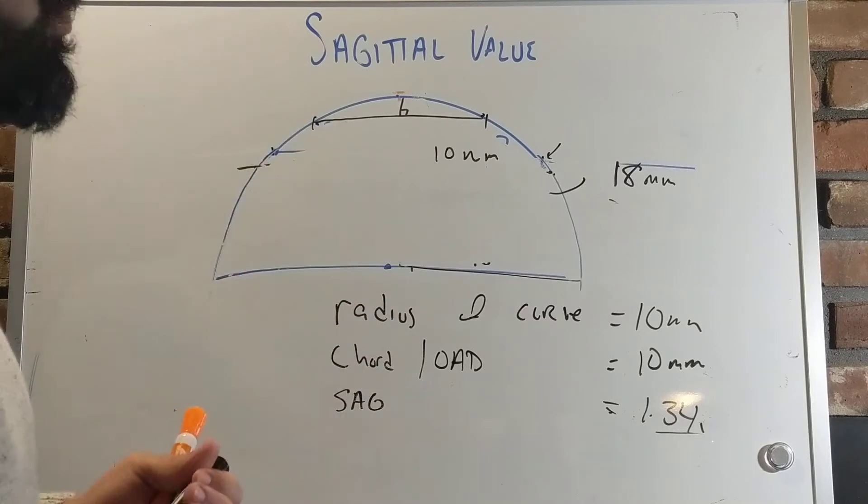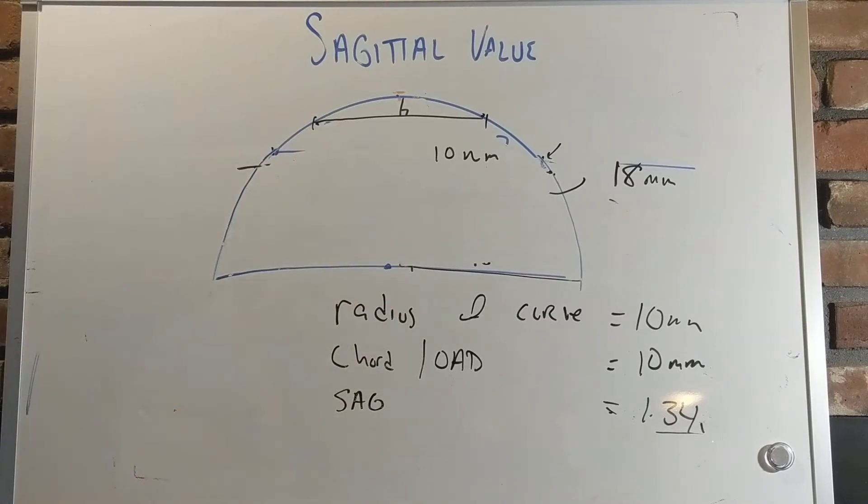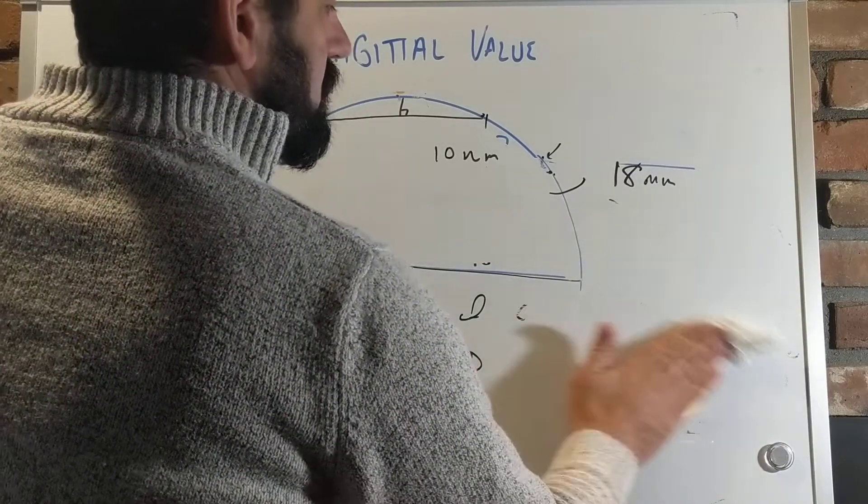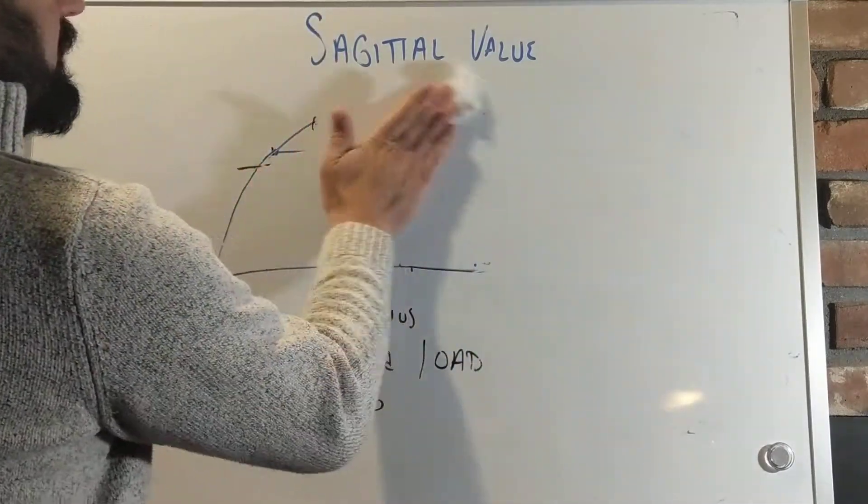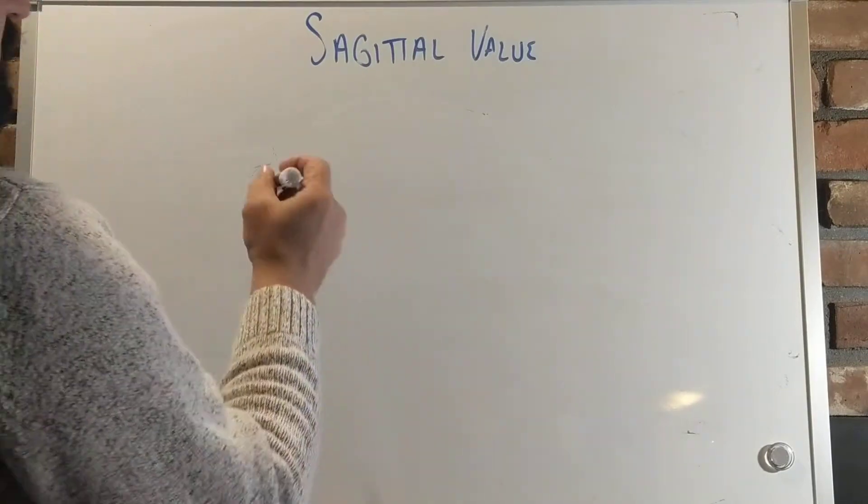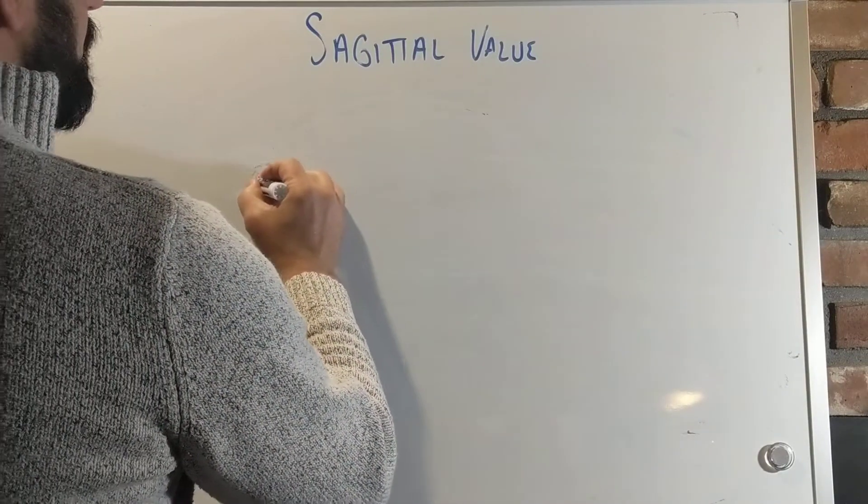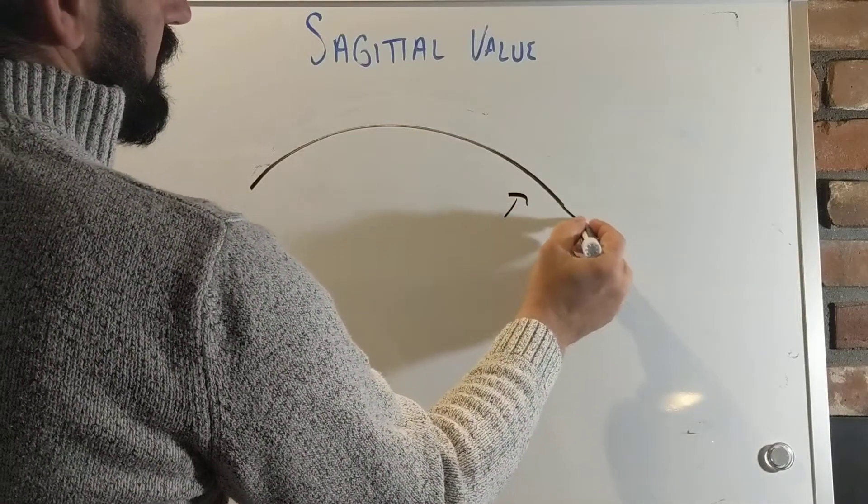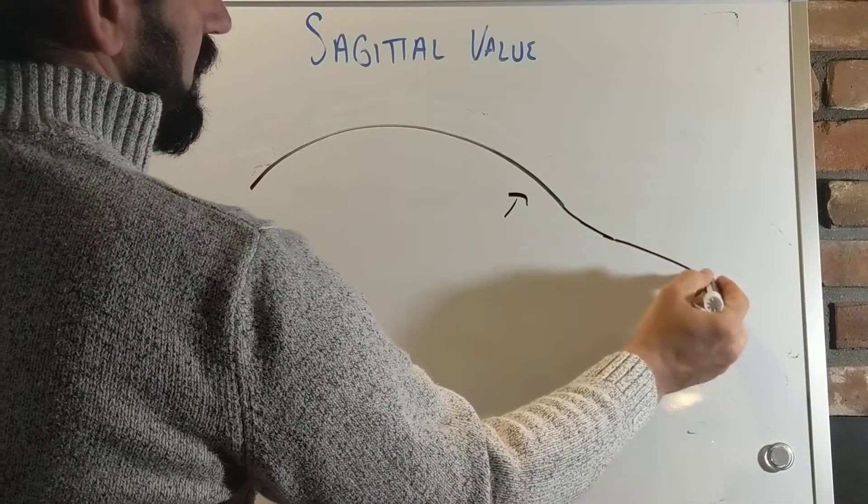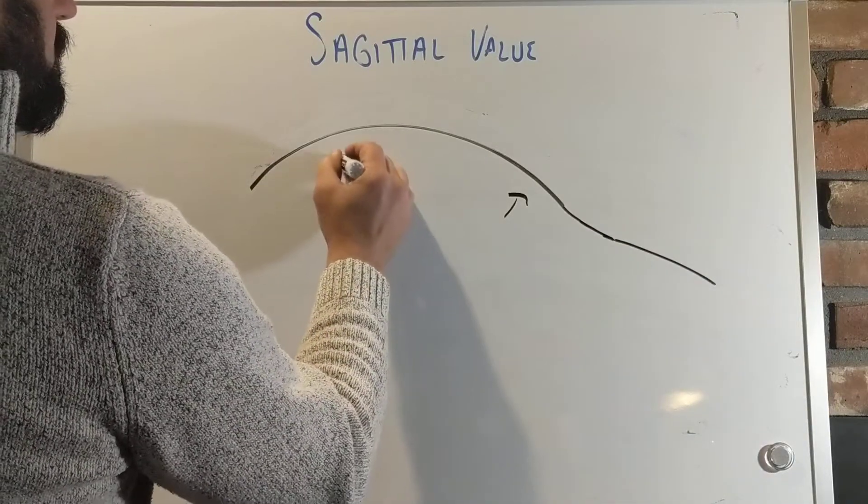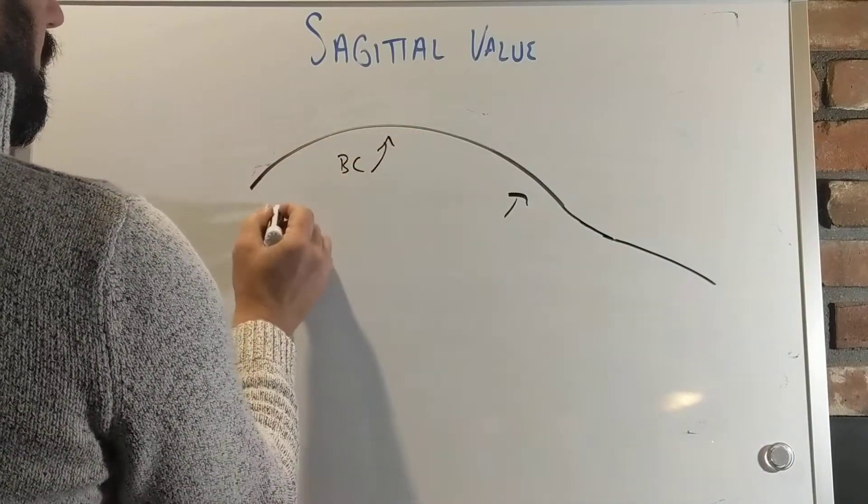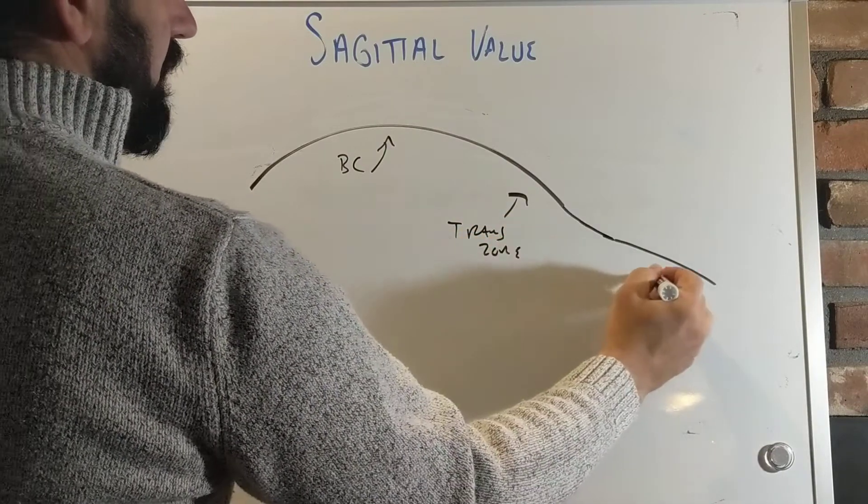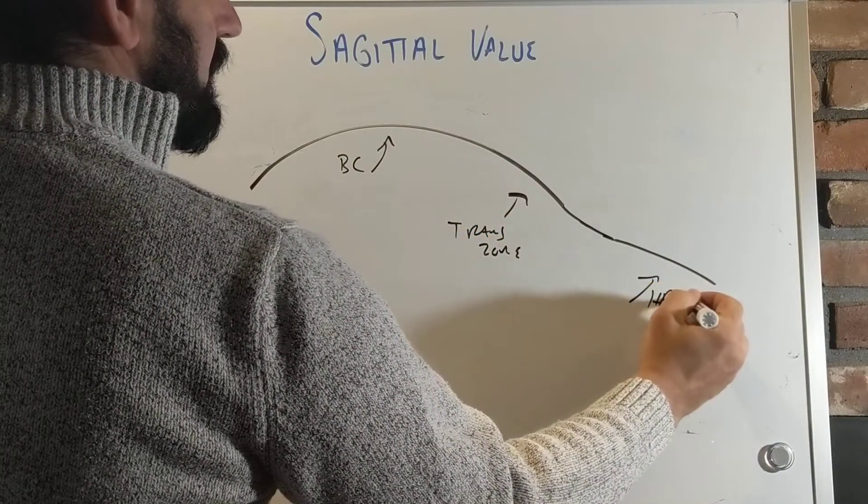But when we start getting into more complex lenses, when we start getting into things like a scleral lens, we're going to stop talking about base curve and overall diameter. Instead of just having, for a scleral lens, for example, you generally have your back curve, then you have a transition zone, and then you have the scleral haptic.